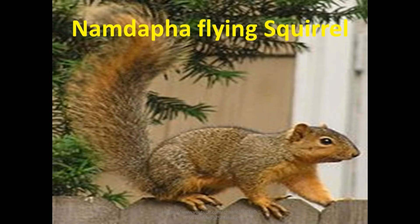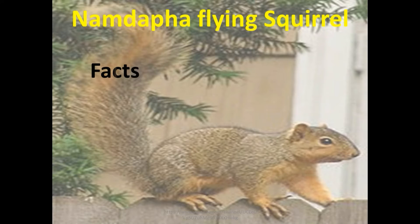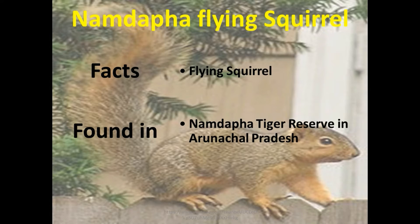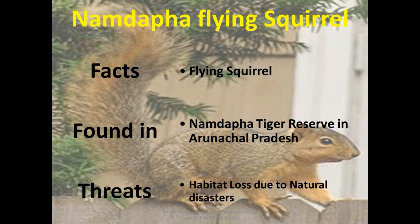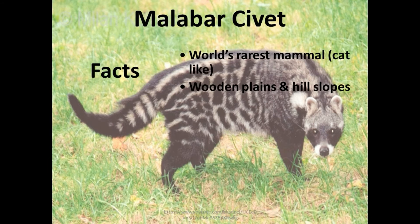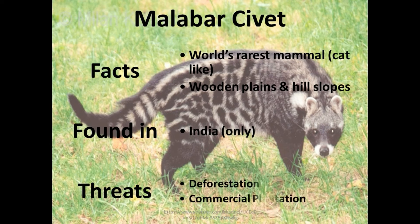The Namdapha flying squirrel is also critically endangered. It is a flying squirrel that glides between trees. It is found mostly in Namdapha Tiger Reserve in Arunachal Pradesh, which is why it is named the Namdapha flying squirrel. The threat is habitat loss due to natural disasters. The Malabar civet is also critically endangered, a cat-like mammal found in wooded plains and hill slopes in India only. Threats include deforestation and commercial plantation.